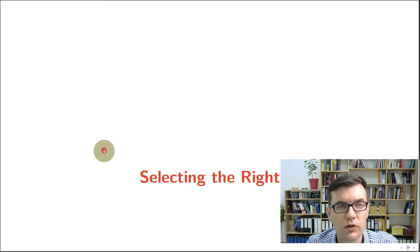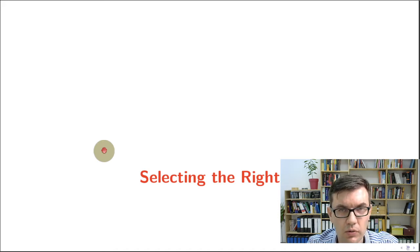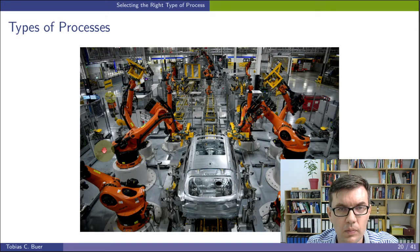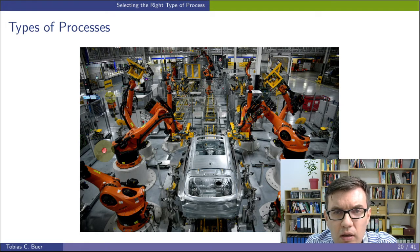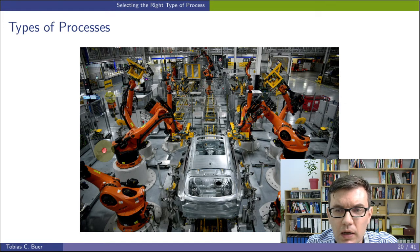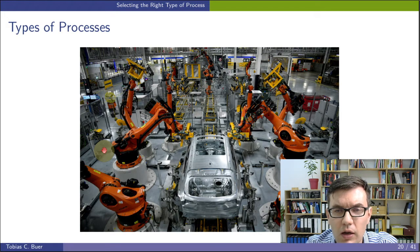Let's start with the first section: which types of processes are there and which one is right for you? Let's gather our thoughts and think about different production processes. On this picture you have an example of an automotive production process where some robots perform production steps on an automobile.